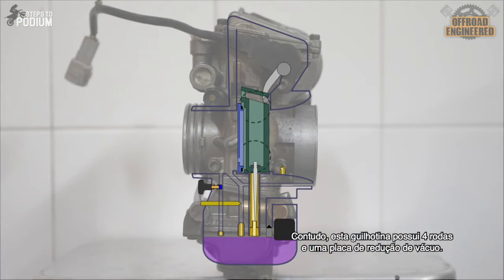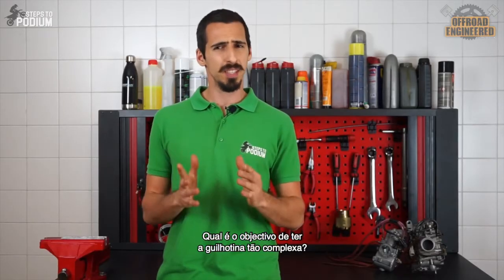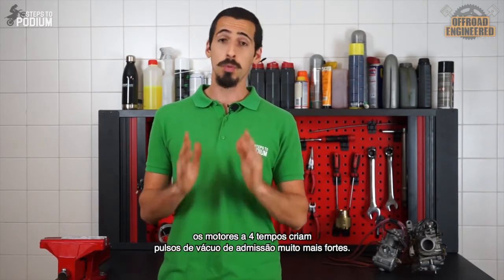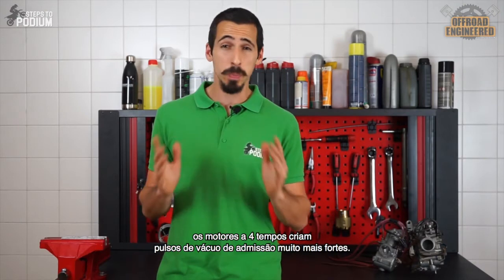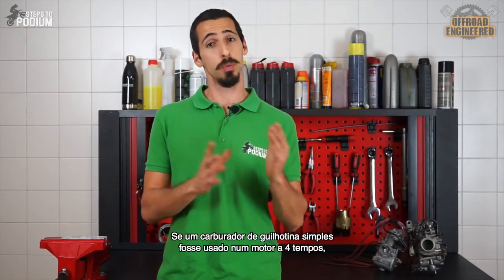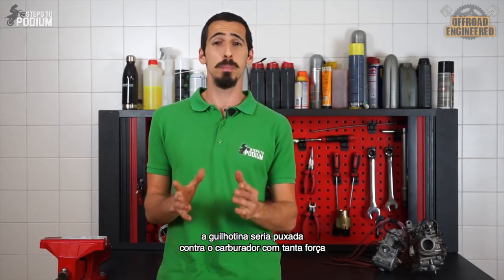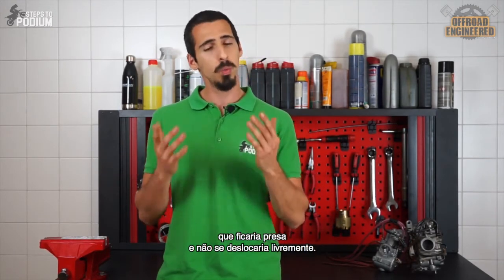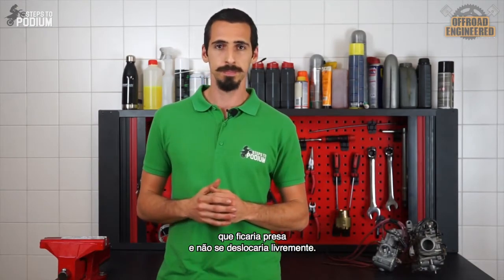However, this slide has four small wheels and a vacuum release plate. So what is the purpose of making the slide so complex? As opposed to two-stroke engines, four-stroke engines create much bigger intake vacuum pulses. If a mechanical slide is used on a four-stroke engine, the slide would get pushed so hard against the carburetor that it would get stuck and wouldn't move freely.